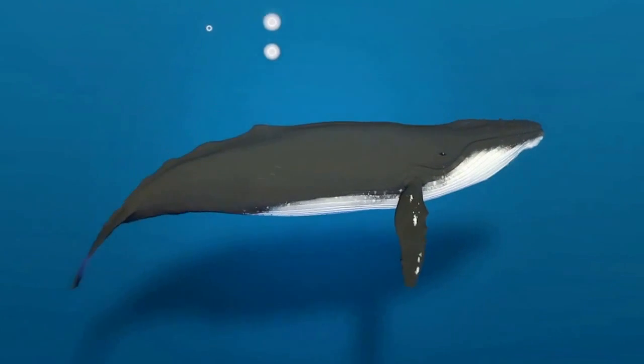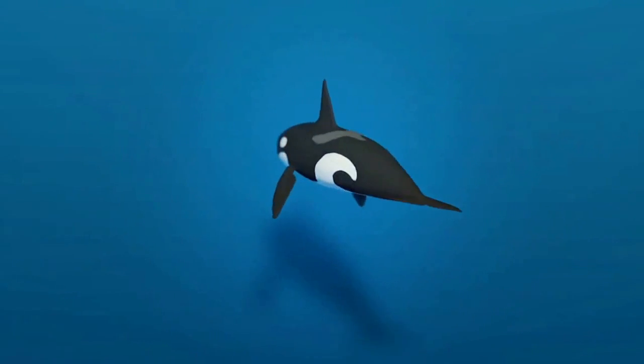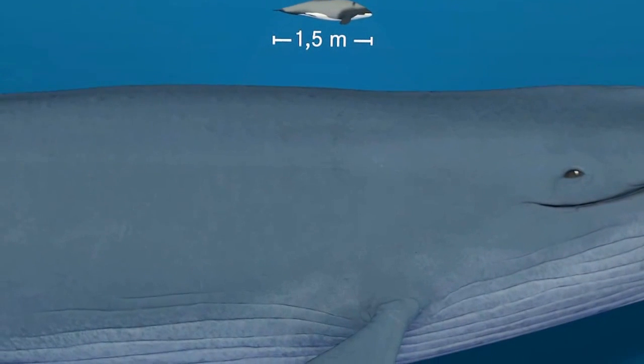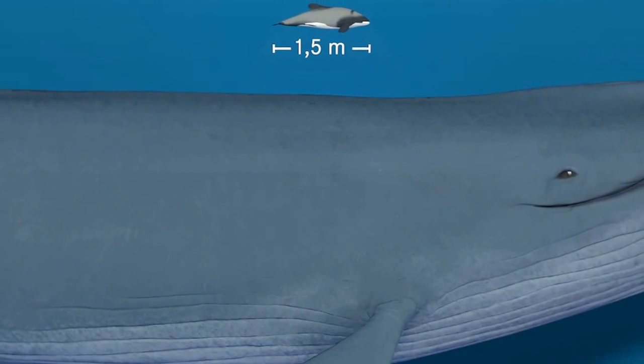Cetaceans have lived in our oceans for millions of years. The smallest one, the Hector's Dolphin, is about 20 times smaller than the blue whale, the largest living organism on Earth.